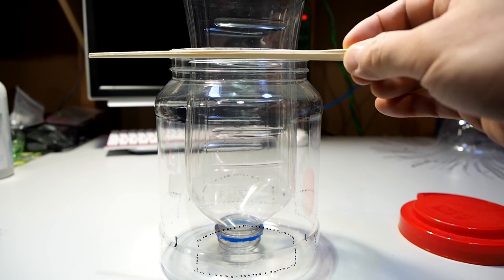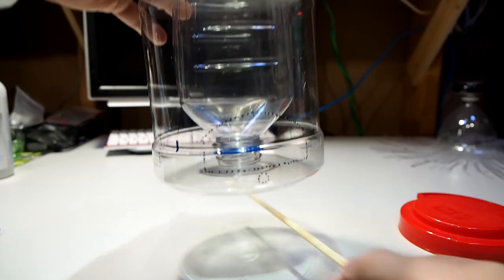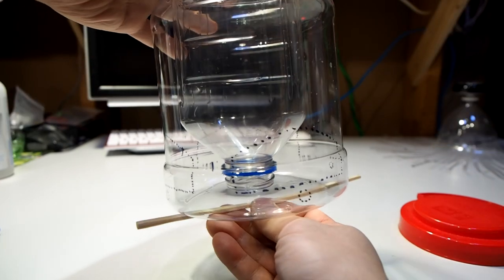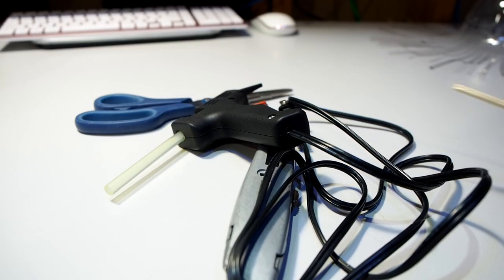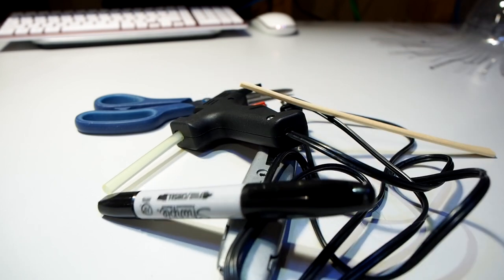And to suspend the juice bottle I'm going to be using a chopstick and cut up the chopstick for the perches. Then I'm going to be using some basic tools like scissors, a utility knife, hot glue, chopstick, and of course the sharpie.